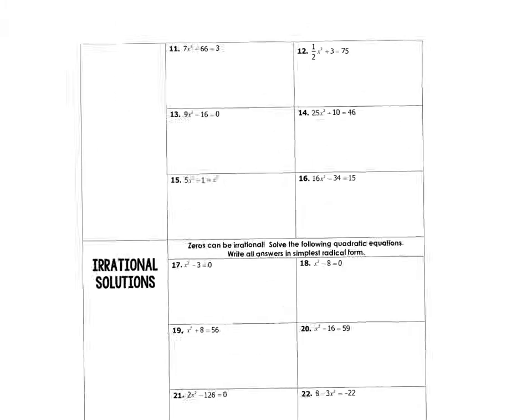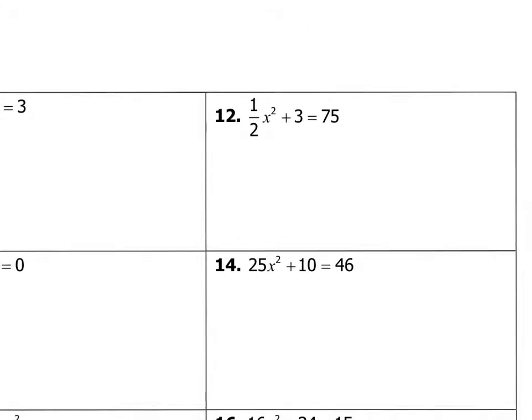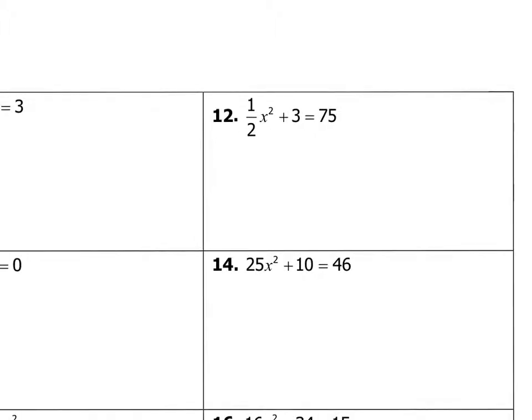So let's take a look at number 12. If I subtract 3, so here I've got a quadratic, obviously, because it's x², and it's got the ax² term and no bx's. You could see the constants here and no bx's.